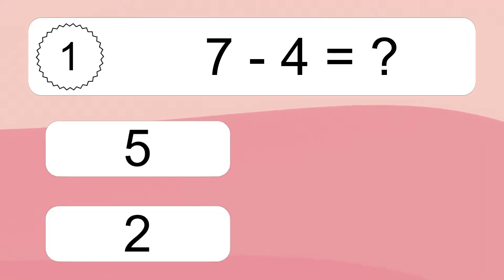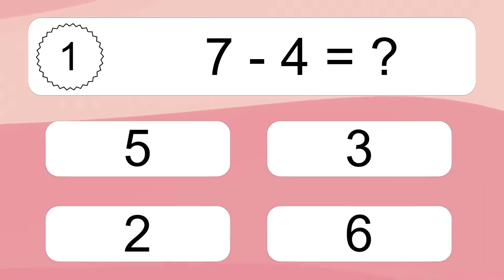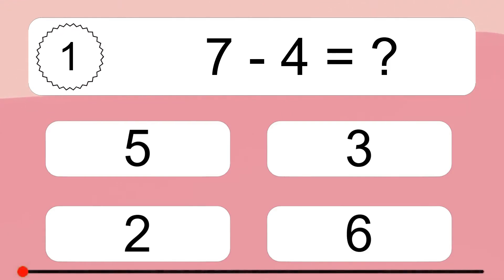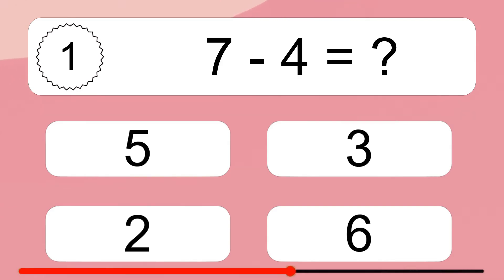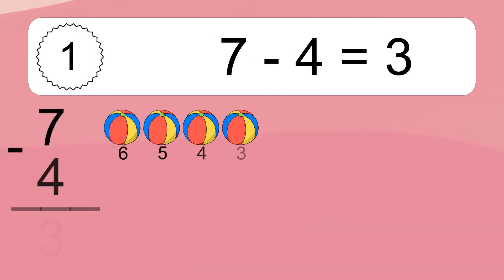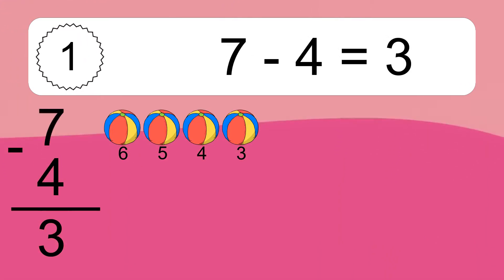7 minus 4 equals what? 7 minus 4 equals 3. Let's count it! 6, 5, 4, 3.